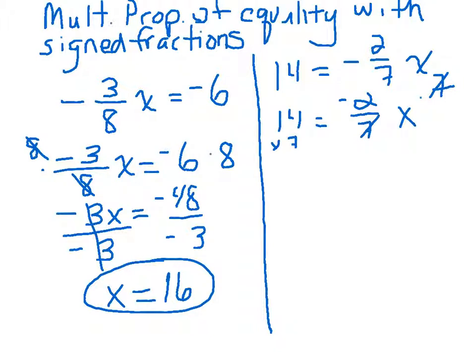And let's see, 14 times seven is going to be 98. And on this side, the right-hand side, we only have negative two x now. It makes it look so much easier. How do we get rid of the negative two?